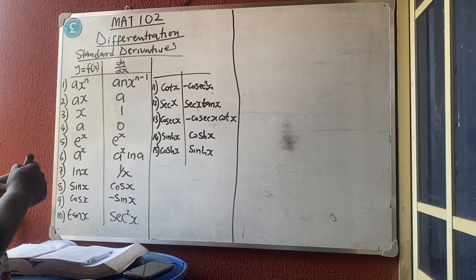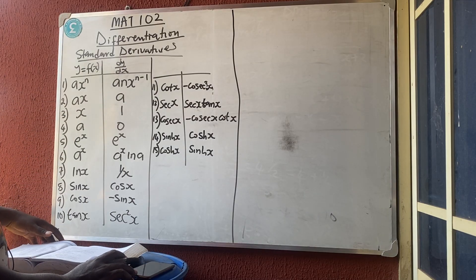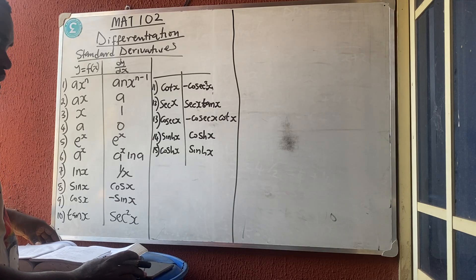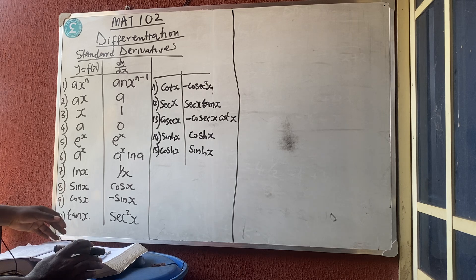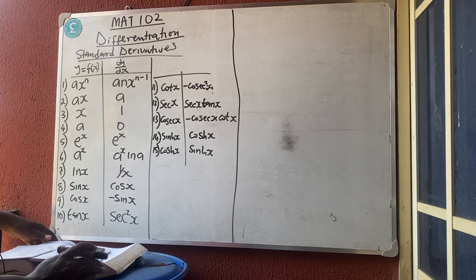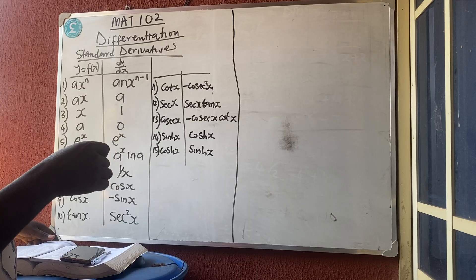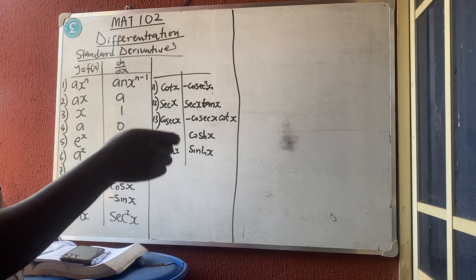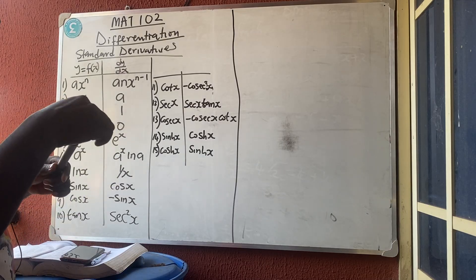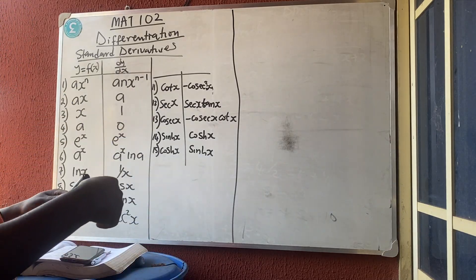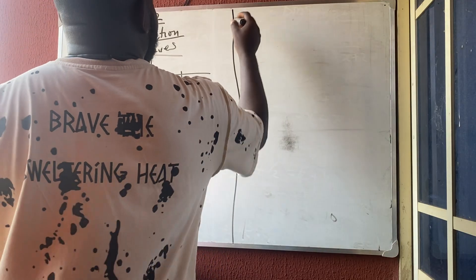So if x increases, y increases; if x decreases, y decreases. For example, if I have 20 subscribers and they pay me 10k, and 40 subscribers pay me 20k, then the amount they pay me is the dependent variable and the number of subscribers is the independent variable.